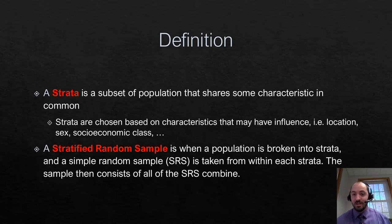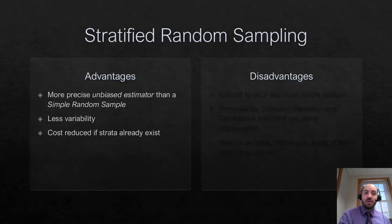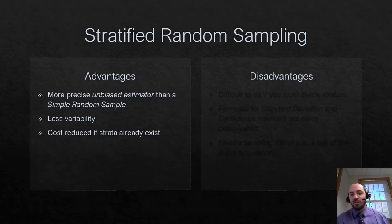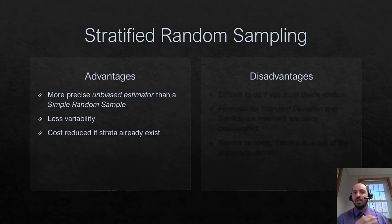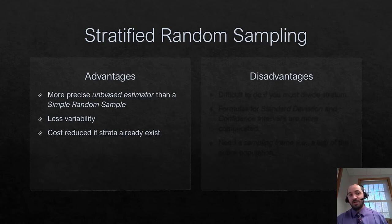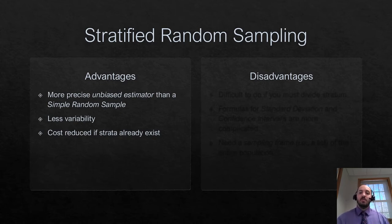So what you do once you have your strata is take simple random samples from within each of these stratas and take that to be your sample. This way you guarantee you're going to have people with each of those characteristic differences that you think might be important within your sample. That's the general idea. There are some advantages and disadvantages to this sampling method. The advantages are it's going to be a better unbiased estimator than a simple random sample because you don't have to worry about coverage. Those important characteristics you created your strata based upon, you're guaranteeing they will be represented within your sample. So it can be better than simple random sampling, and you have less variability from sample to sample. And if your strata already exists, it's not going to cost much money and it's going to save you time.